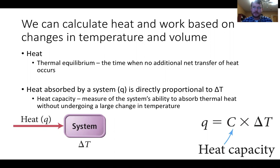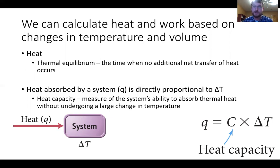The change in temperature makes sense: if you add more heat, the heat absorbed by the system goes up proportionally. Q heat is equal to delta T — remember, delta is a state function, always final minus initial, so it's temperature final minus temperature initial. We have to multiply delta T by a constant C, which is called heat capacity. Heat capacity measures the system's ability to absorb thermal heat without undergoing a large change in temperature. The higher the heat capacity, the less likely something is to change temperature.